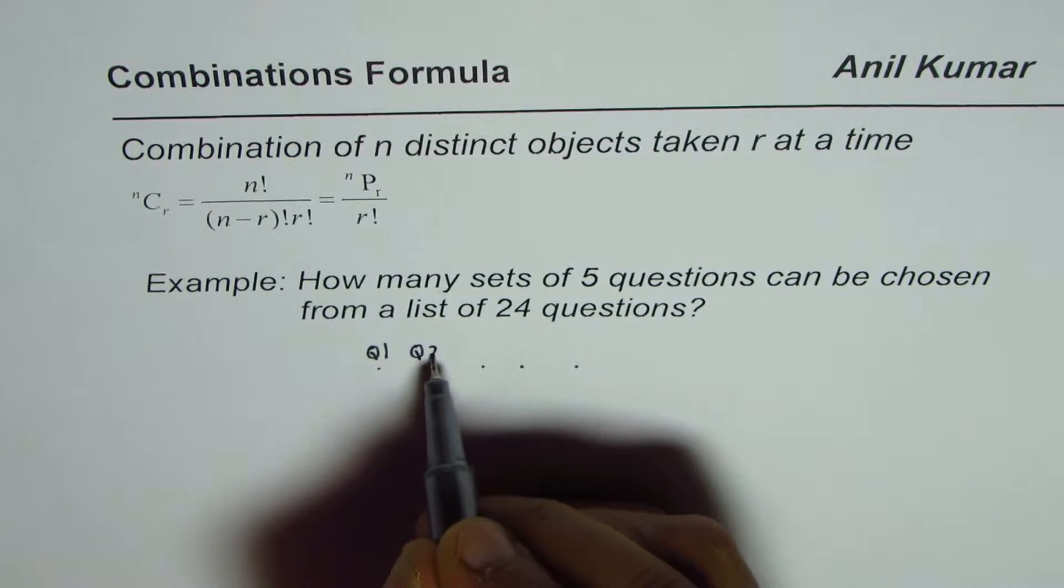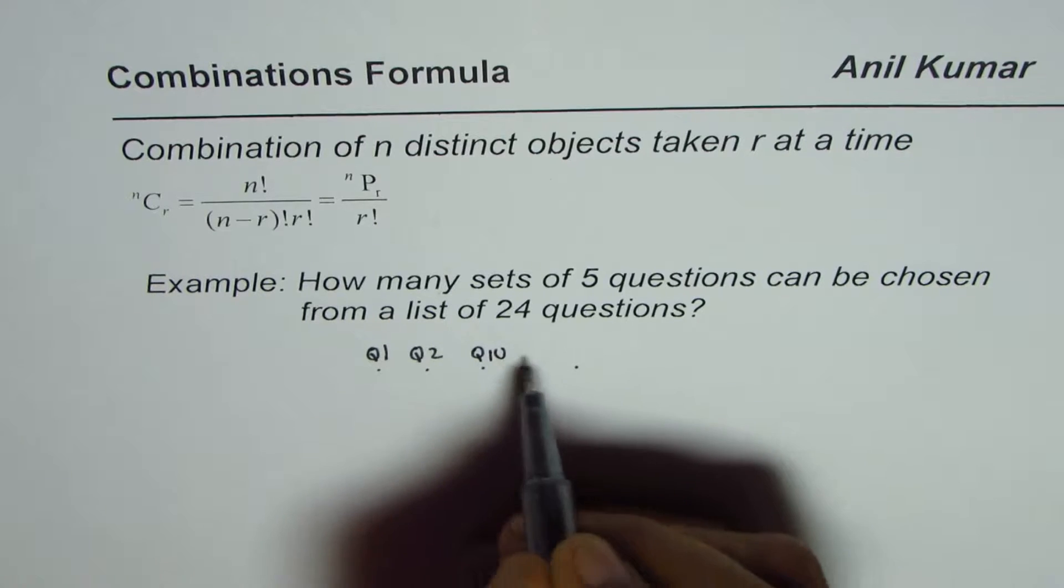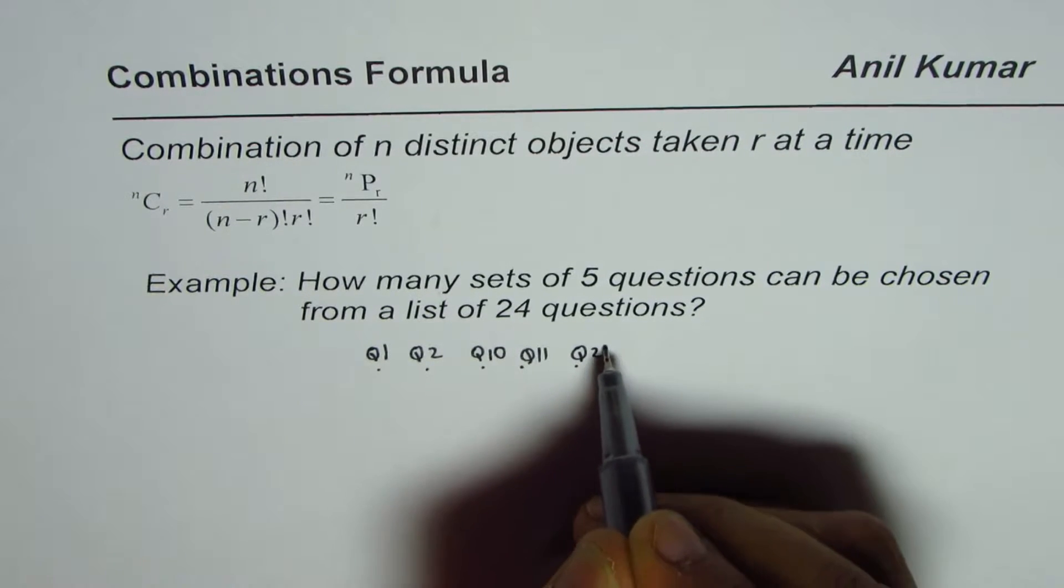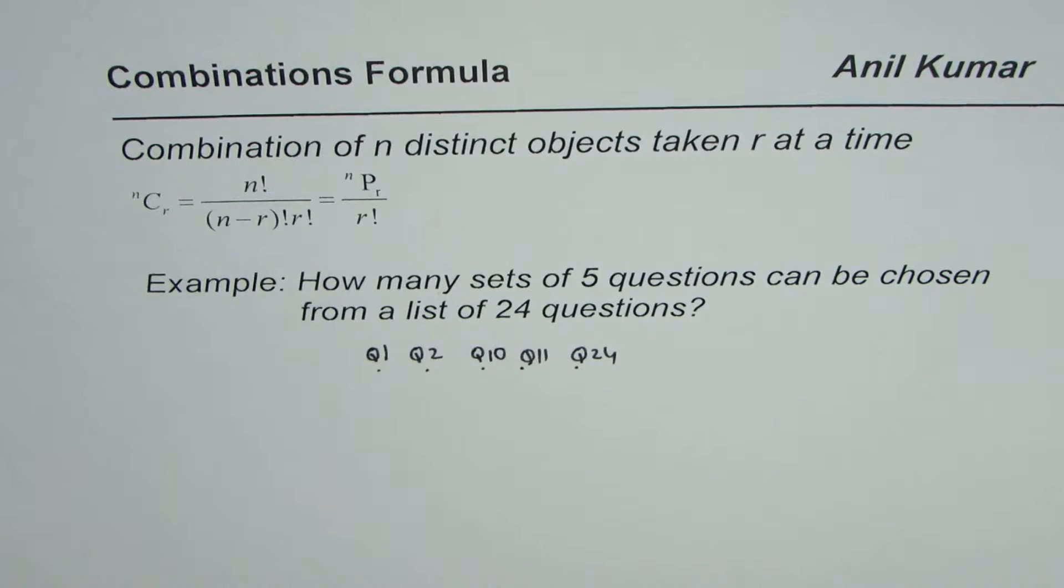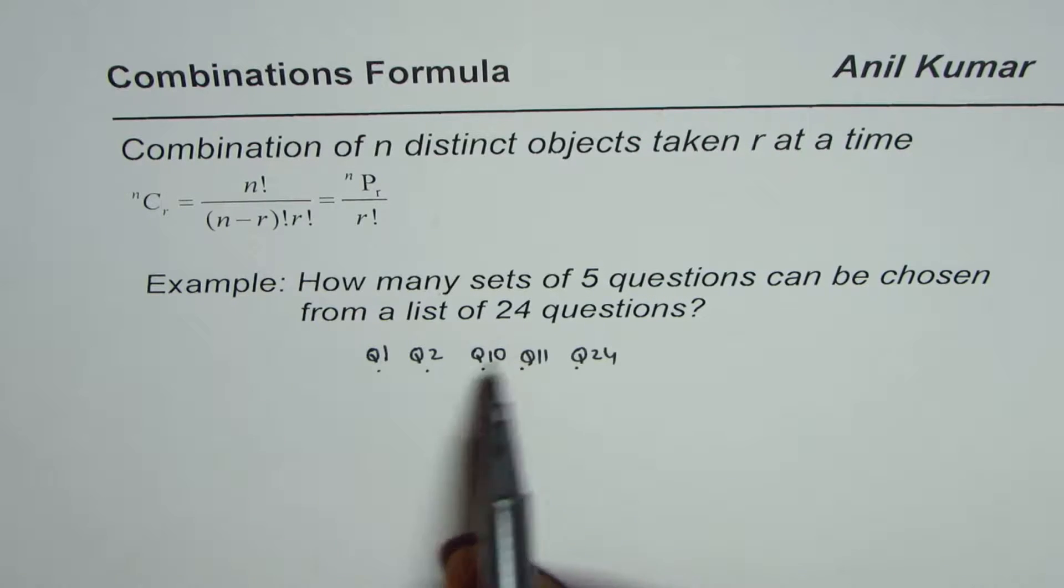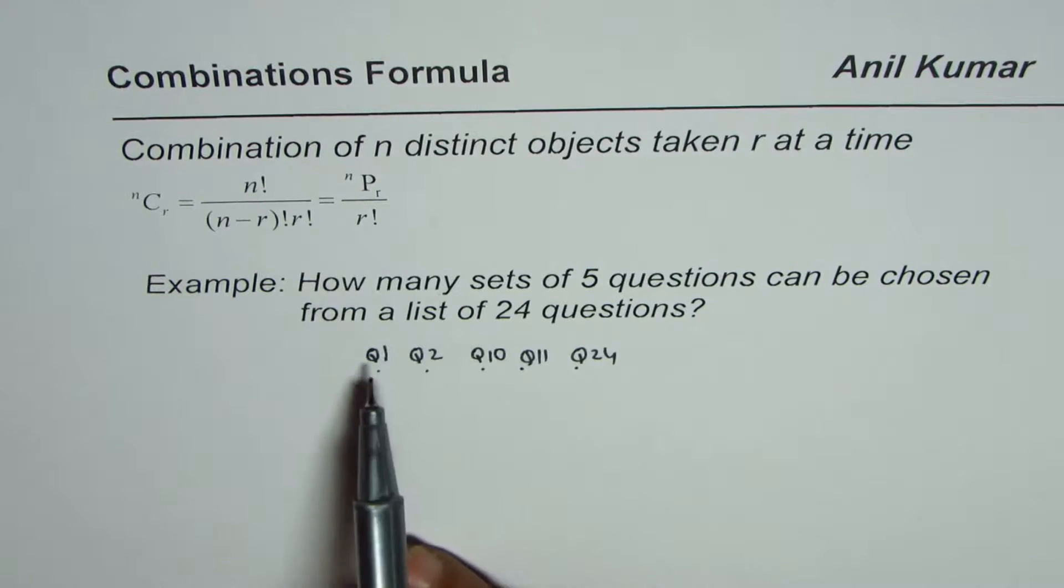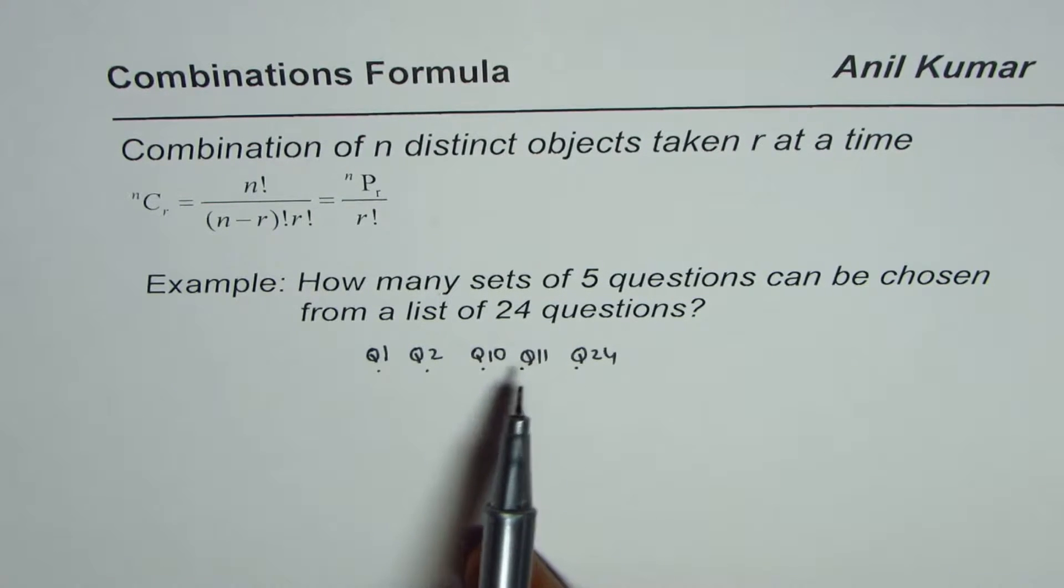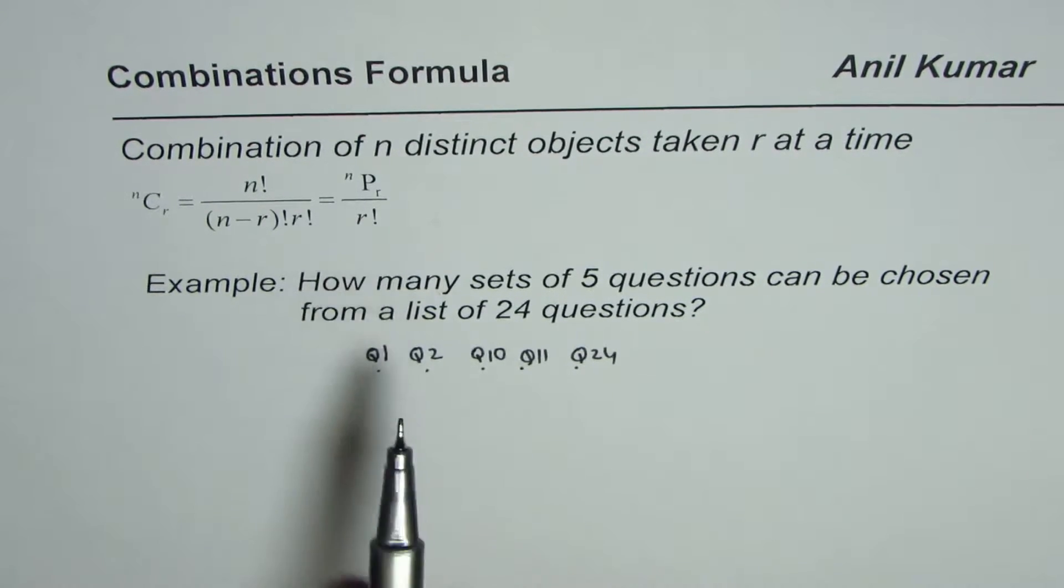Let's say you select question number 1, 2, 10, 11, and 24. Let that be one of the selections. Then the order—selecting 2 first, 10 first, or 11 first amongst this group—is not important. They are the same selection.